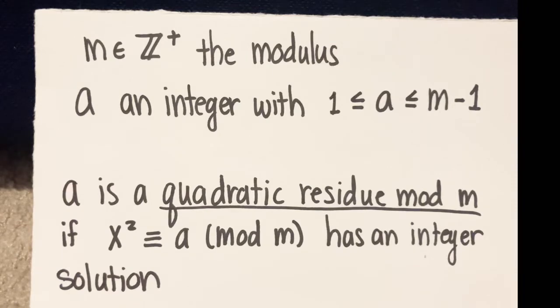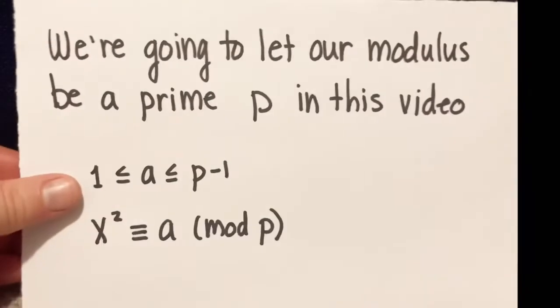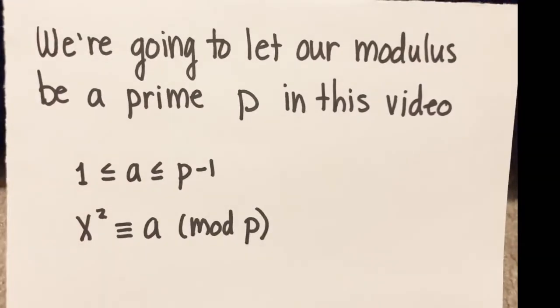We are going to change things up a little bit for this video, and we are going to just let our modulus be a prime p instead of any integer m. Same setup: positive prime p, a is between 1 and p minus 1, and a is a quadratic residue mod p if x squared congruent to a mod p has a solution.